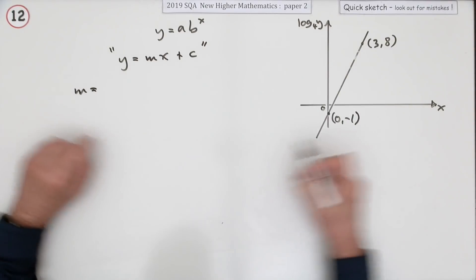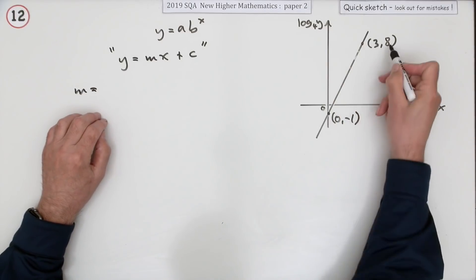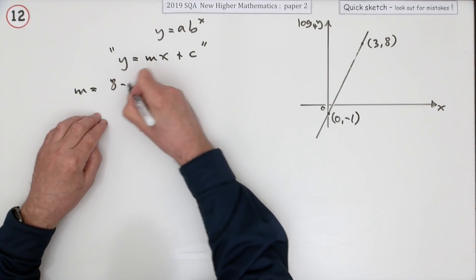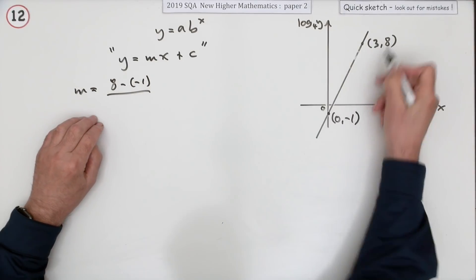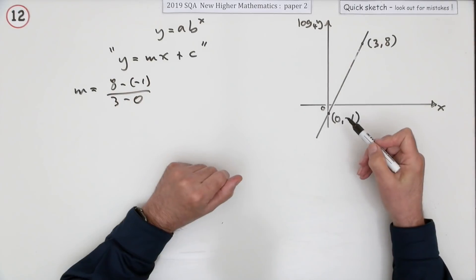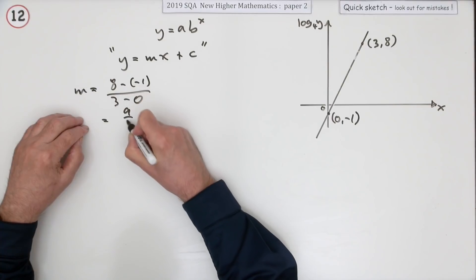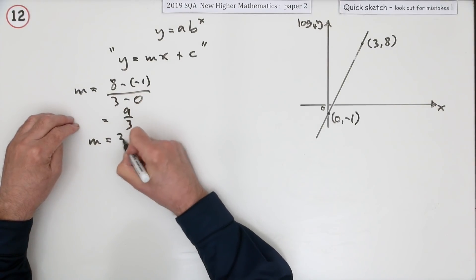What's the gradient? Gradient of that line is the distance up over the distance along, the difference in the vertical coordinates. That's 8 take away -1 over the difference in the horizontal coordinates. So the gradient is going to be 9 upon 3, so the gradient's 3.